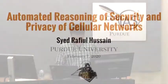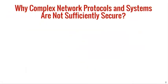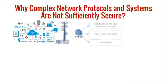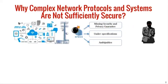Thank you, Jerry, for the nice introduction. Thank you all for having me here. Today I'm going to talk about automated reasoning of security and privacy of cellular networks. When complex network protocols are designed, security is often considered as an afterthought, resulting in missing security and privacy guarantees under specifications and ambiguities in the technical designs. All these problems lead to critical vulnerabilities which adversaries exploit to perform attacks.